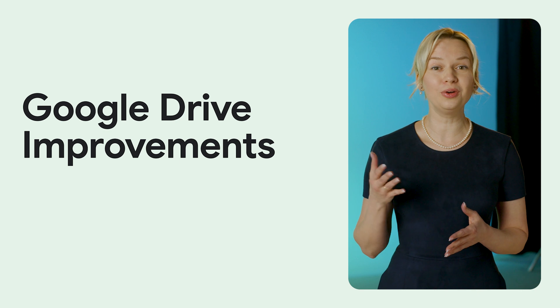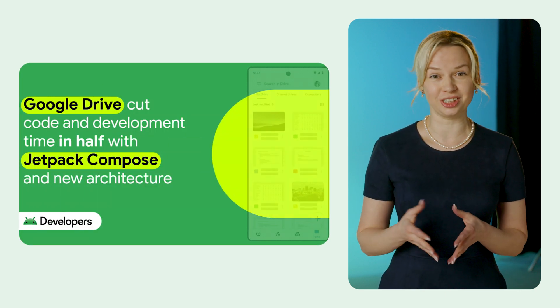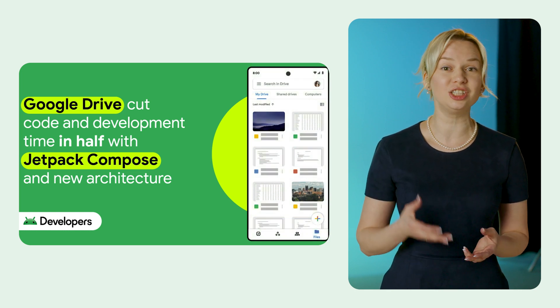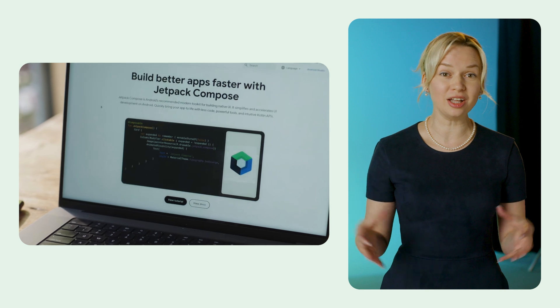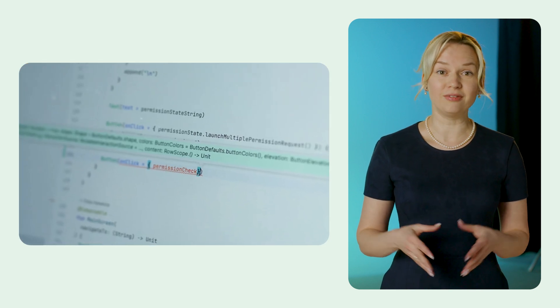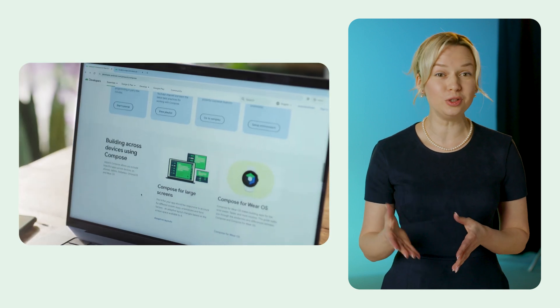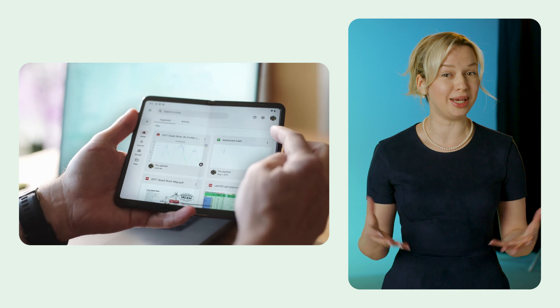We covered how Google Drive cut code and development time in half with Jetpack Compose and new architecture. Google Drive's developers revamped the app's home screen using Kotlin and Jetpack Compose, reducing complexity and improving efficiency. The adoption of Android's recommended architecture further enhanced the process, facilitating quicker testing and development. As a result, the Google Drive team was able to develop the app's new home screen in less than half the time they expected. The team plans to use Compose for future improvements, aiming for better UI development and maintenance.